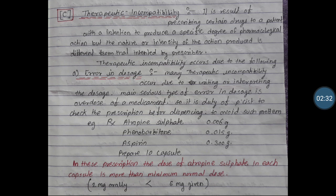The first reason due to which therapeutic incompatibility occurs is error in dosage. Many therapeutic incompatibilities occur due to errors in writing or interpreting the dosage — that means a doctor intends to write a dose of a particular medicine with a particular direction, but by some mistake there is an error in writing or interpreting the dosage.